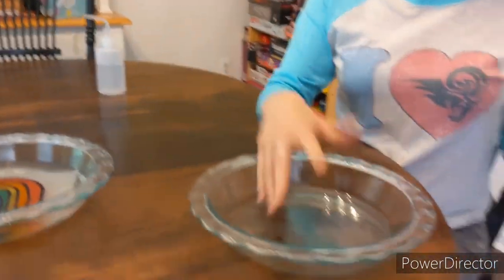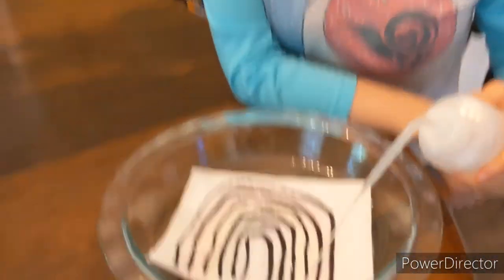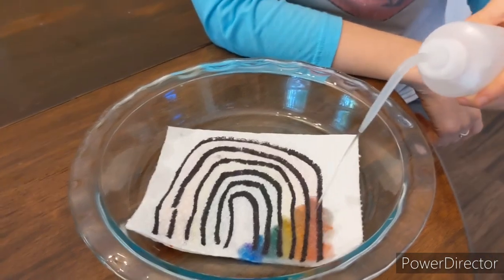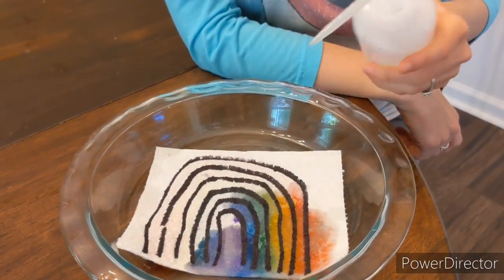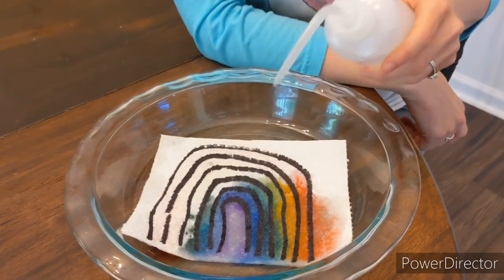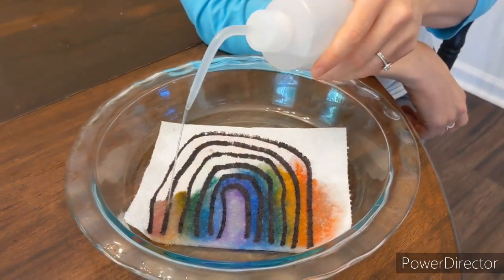So this other way you can do it is you can get a bowl or pie dish or a pan, whatever you have, and put it in there and then have your child put the water on themselves and watch as the rainbow comes up. But this time they get to control it and make it happen as quick as they want. You can see all our colors coming through: red, orange, yellow, green, blue, and purple.